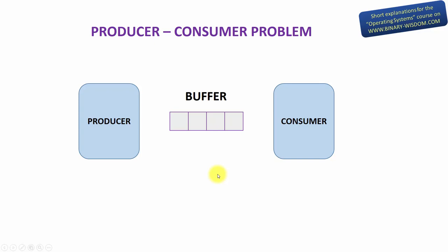Both the producer and consumer are in fact processes or threads. For example, the producer thread generates some frames or web pages and the consumer thread shows them on screen or sends them via a network. The buffer that they use to exchange these data items is in fact the shared memory that can hold a certain number of items.